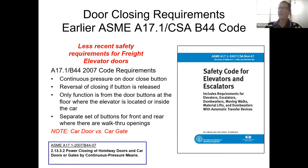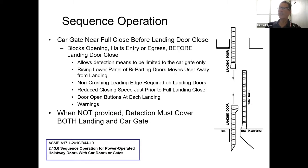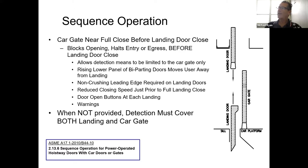That is the first way the doors were operated: constant pressure. Later on, the rule was changed to 2.13.6, which was sequence operation. Sequence operation said the door would close after the car gate — car gate closes first, then the door. This was a safety requirement, and in doing so, the code only required door manufacturers such as ourselves to protect the car gate. If you have sequence operation where the gate closes first then doors, and the reverse is true in opening, the manufacturer only needed to protect the car gate. That will be important later.